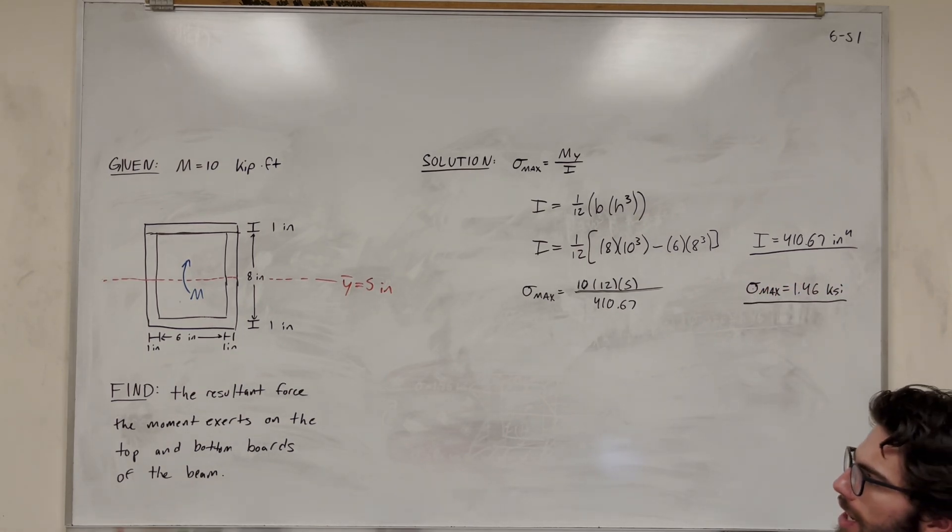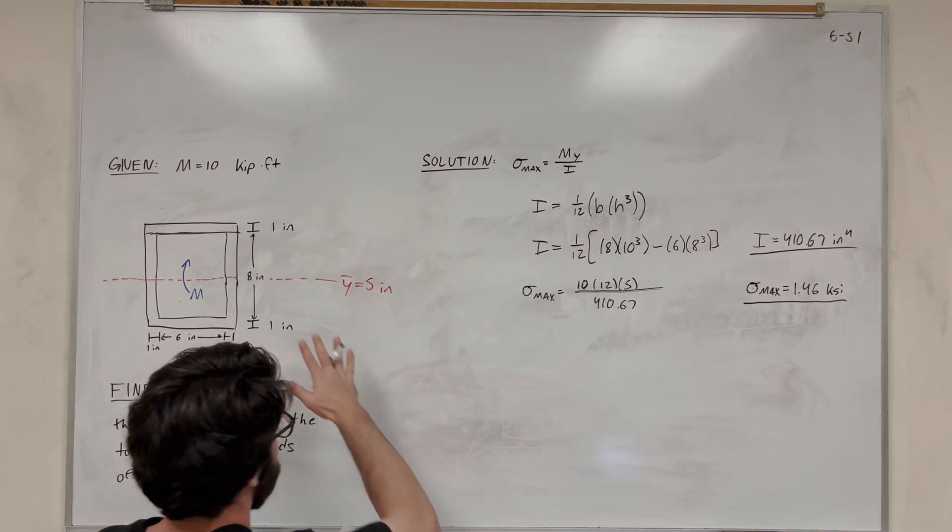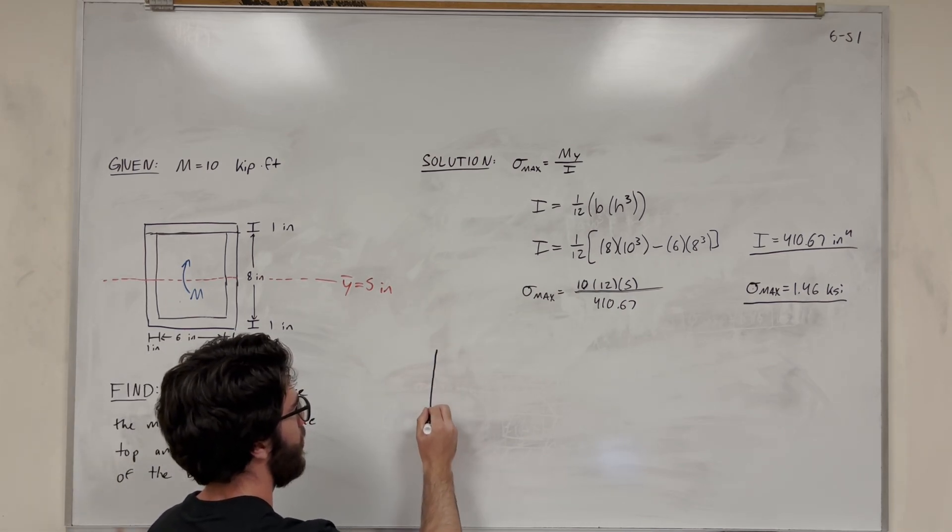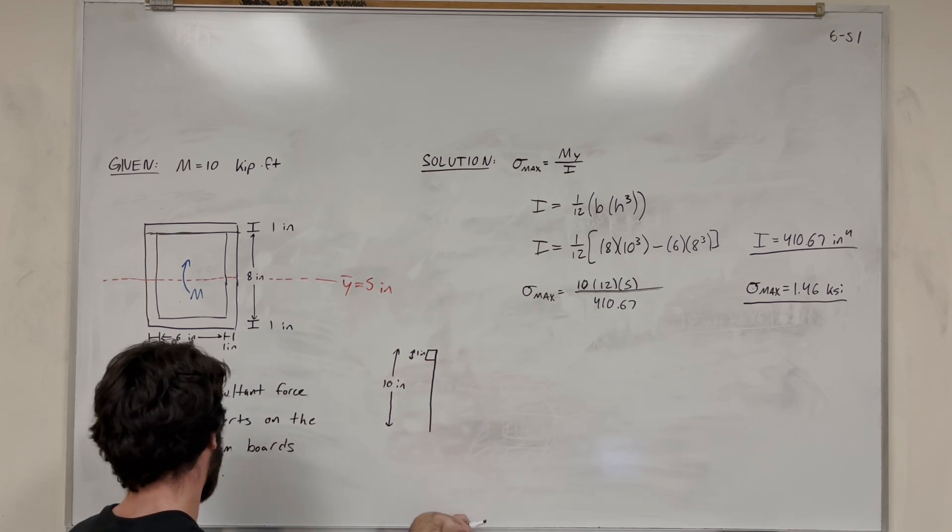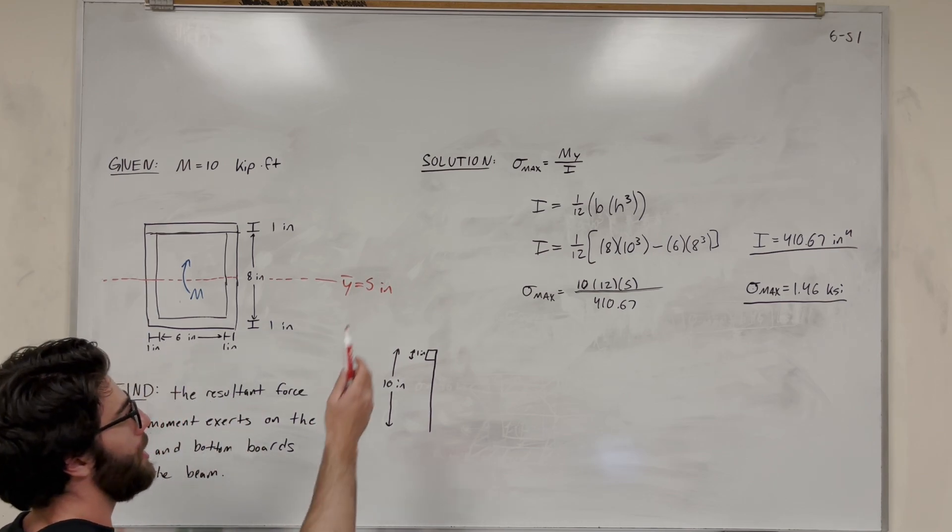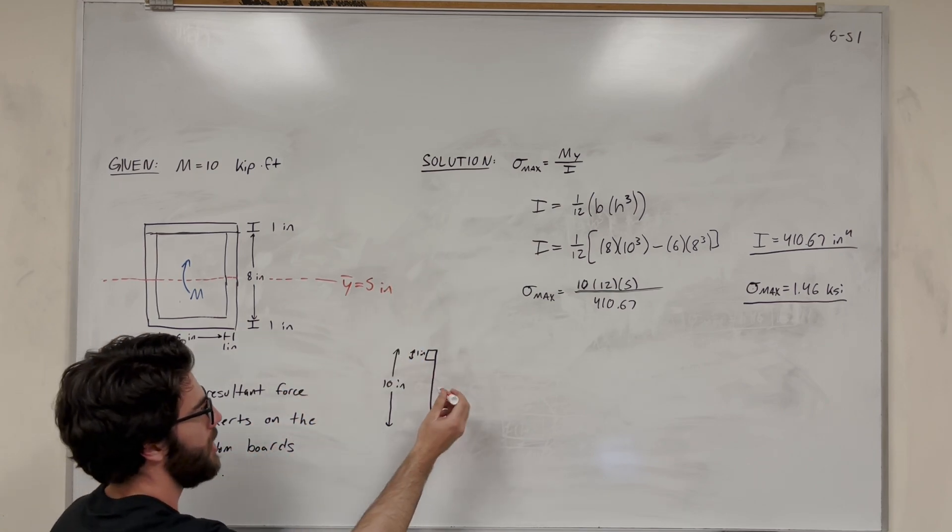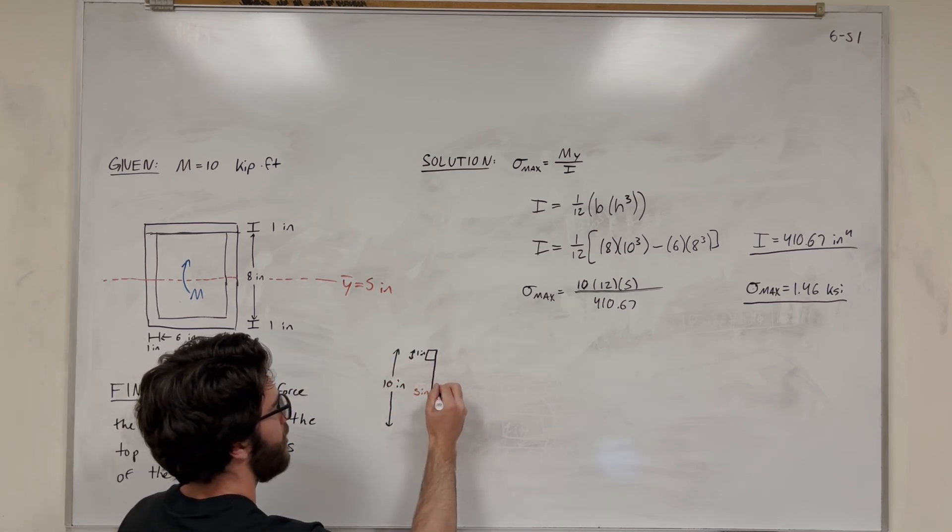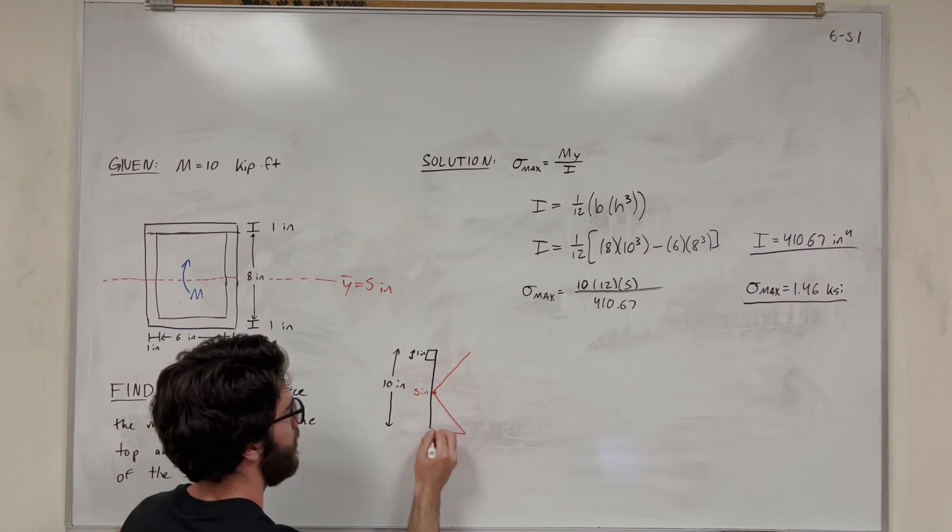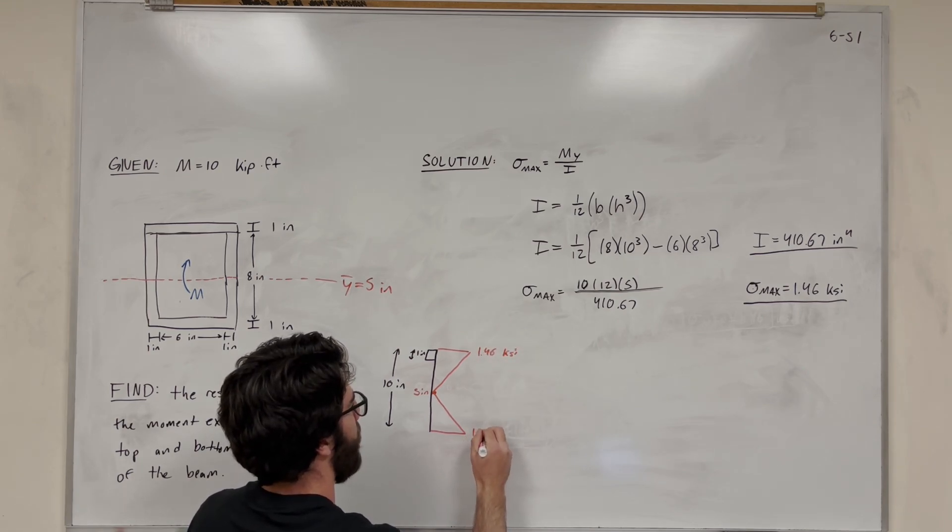From here, we want to find the resultant force that the moment exerts on the top and bottom boards. Let's draw a little image of what's happening, rotated 90 degrees, looking at it from the side view. This is 10 inches tall and we have our beam up here, which is 1 inch tall. What does our bending stress look like? Because bending stress is related to distance away from the center of mass, if our distance y is 0, then bending stress is 0. It's going to increase linearly either direction to a maximum, maxing out here at 1.46 kSI and also here at 1.46 kSI.